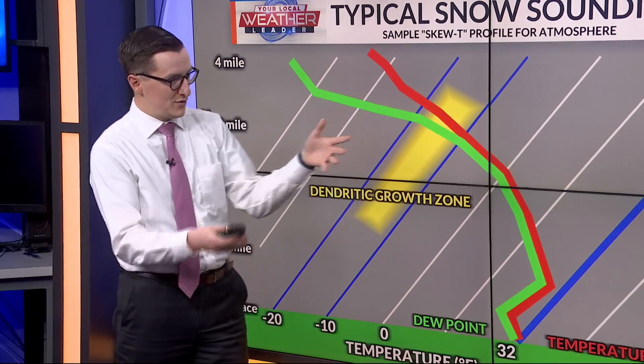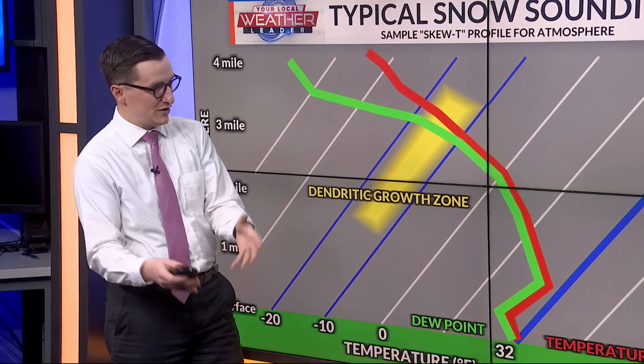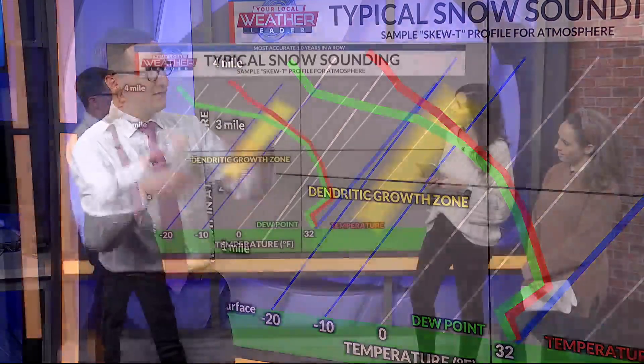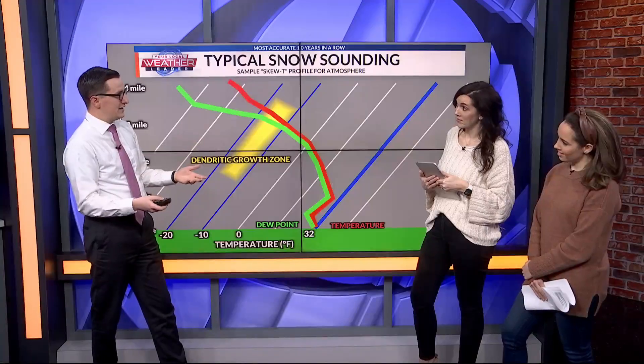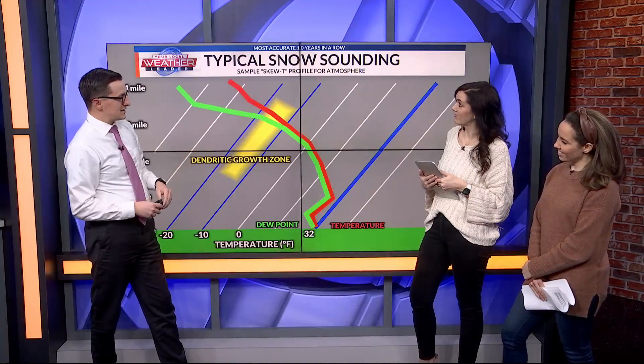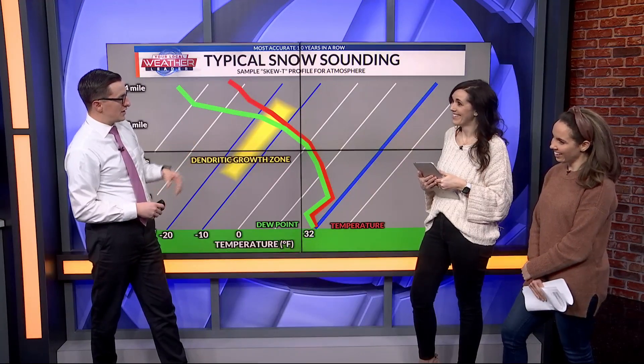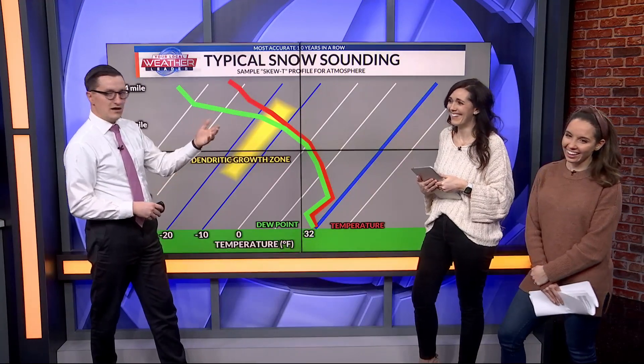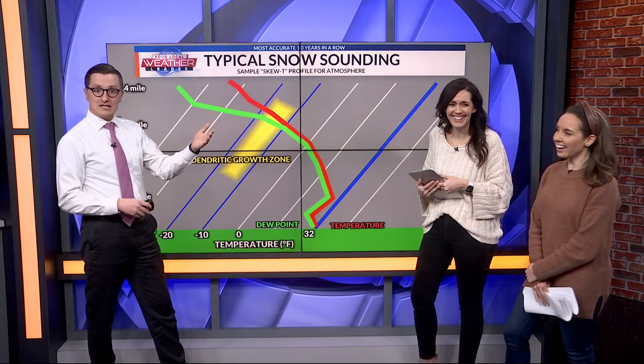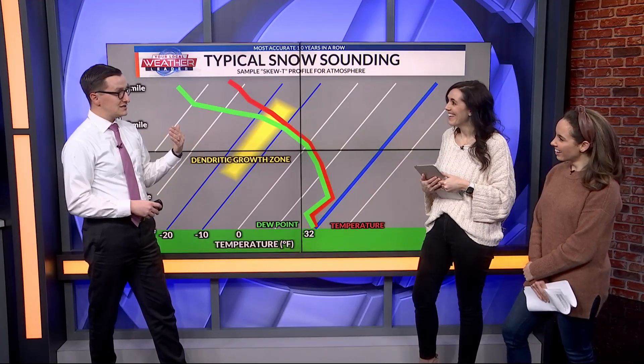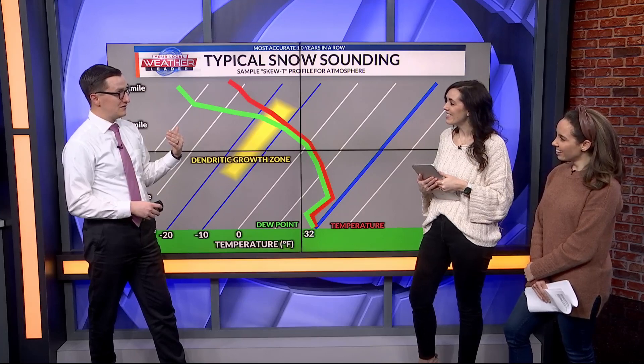It's called the dendritic growth zone, or the snow growth zone, where our snow is actually created. That's way high up there. We don't make snow at the surface — it falls from the sky. And so our temperature profile, we need the temperature to be below 32 to have snow.